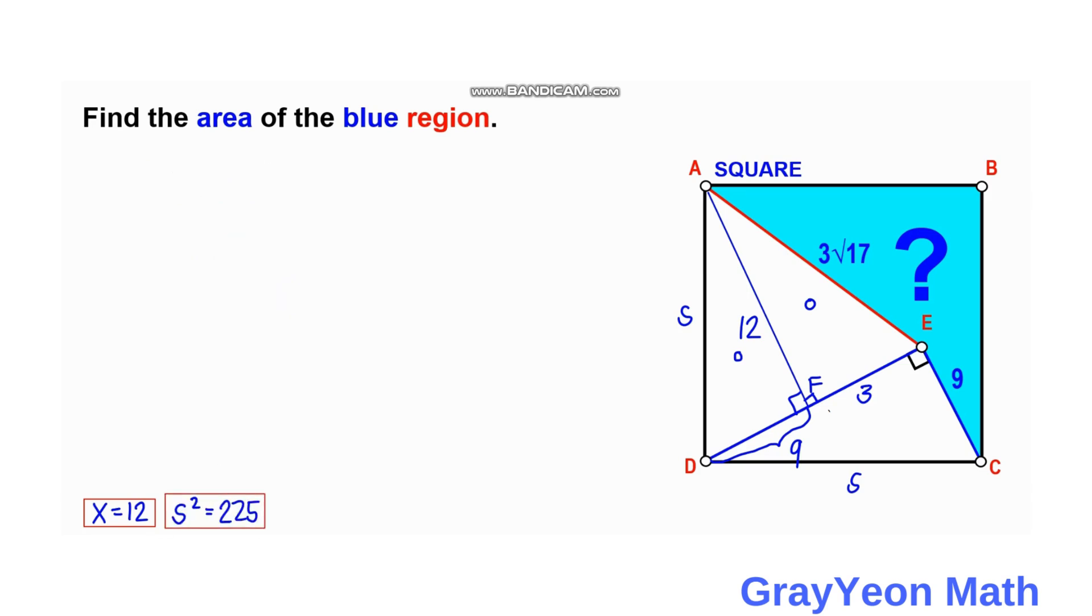So now, since we are after the area of the region, as you can see, the area is equal to the area of the square, which is S squared, and we need to subtract this area of triangle AED and subtract area of triangle EDC.